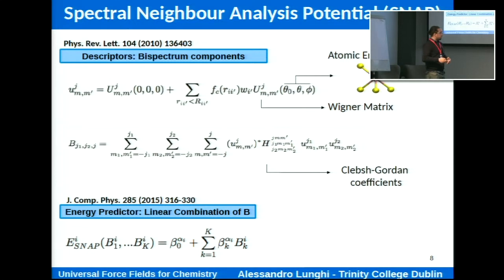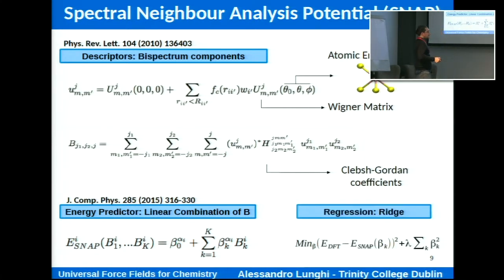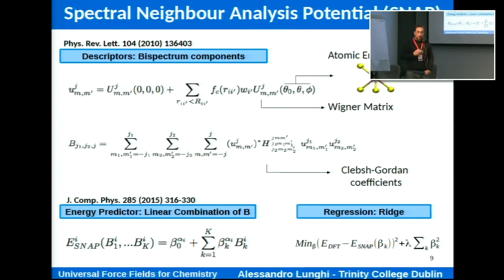For the energy expression, we chose one from the literature — probably the easiest thing you can do in machine learning: you assume the energy is linear in the bispectrum components, where the beta coefficients are the parameters of the force field to be determined. Having a linear expression makes the training stage extremely easy — you simply apply ridge regression, and in one matrix inversion you get all the parameters. Essentially it's a linear least squares regression plus a regularization term that helps avoid overfitting.